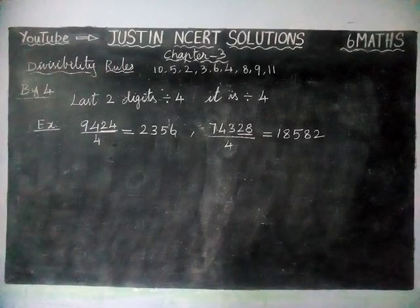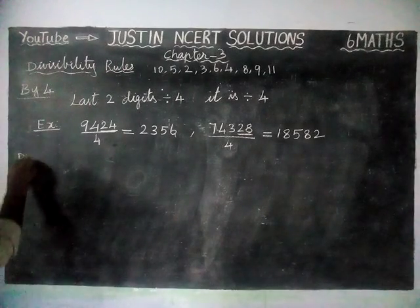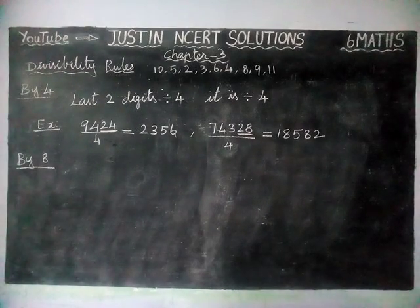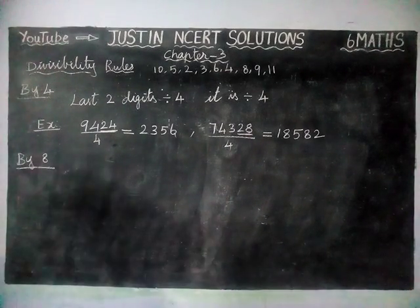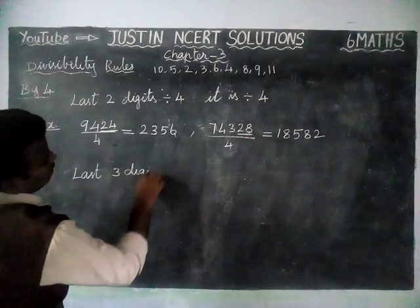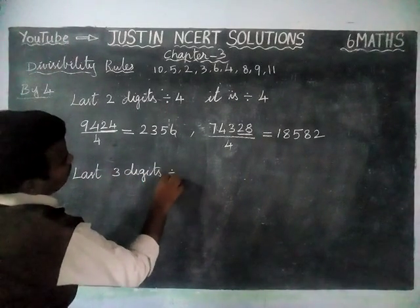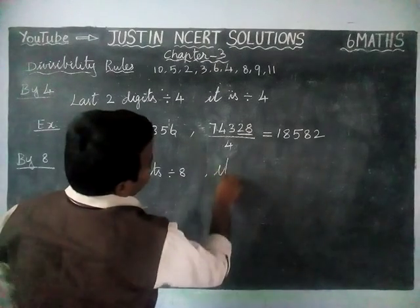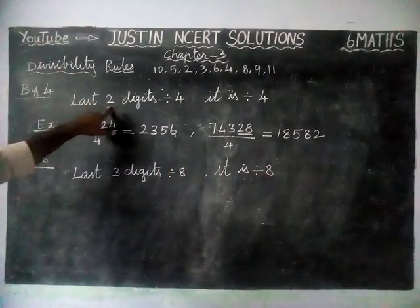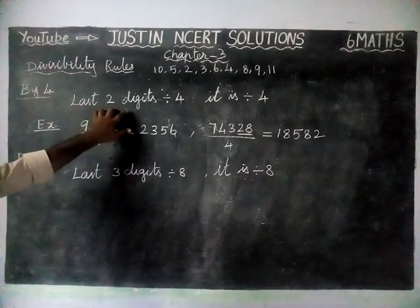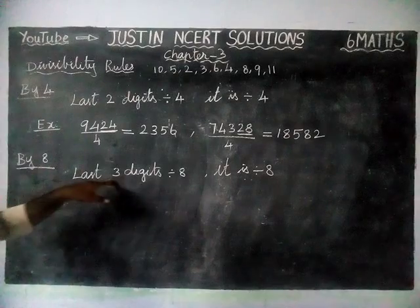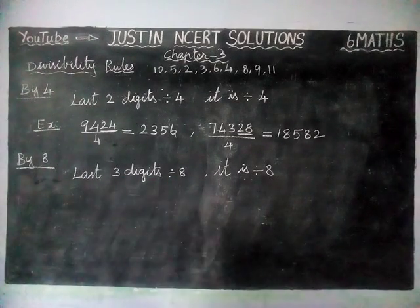Next, divisibility by 8. If the last three digits are divisible by 8, then the number is divisible by 8. For 4, we check the last two digits; but for 8, the last three digits must be divisible by 8 for the entire number to be divisible by 8.